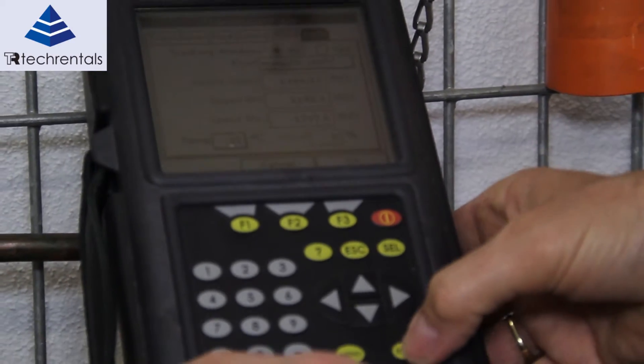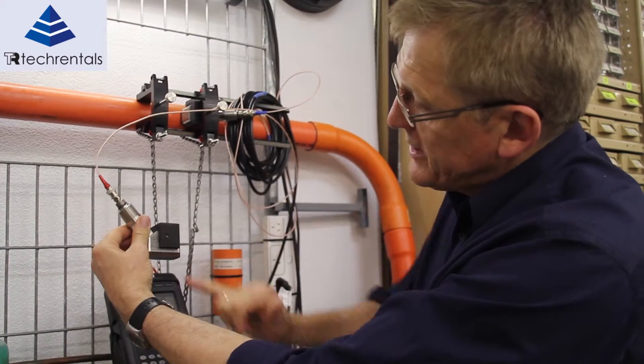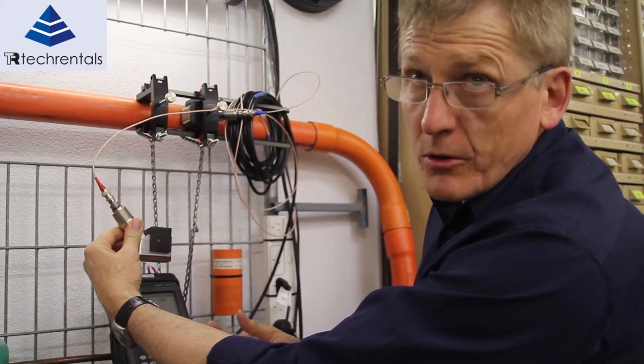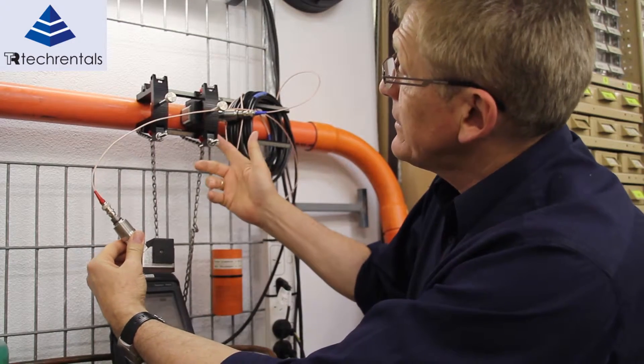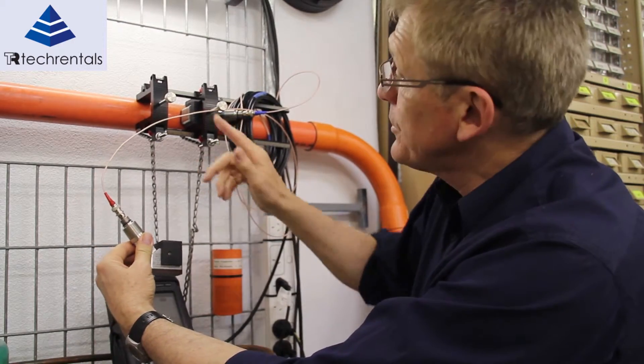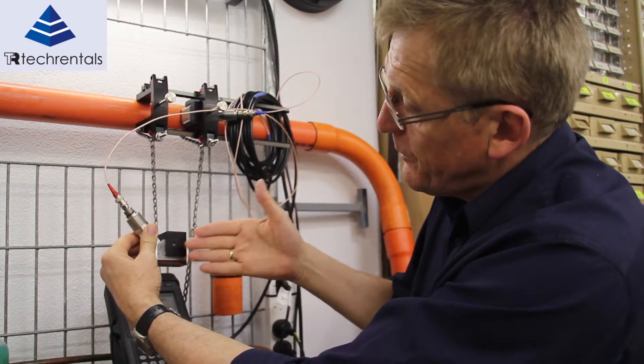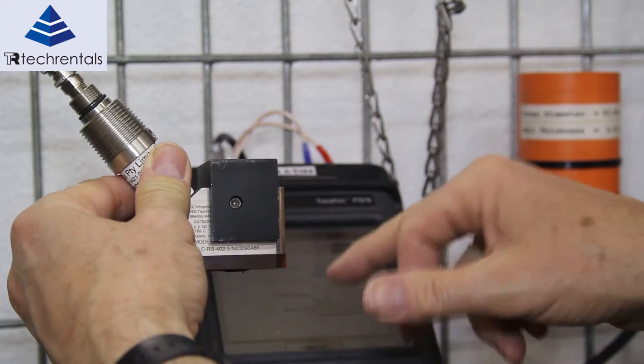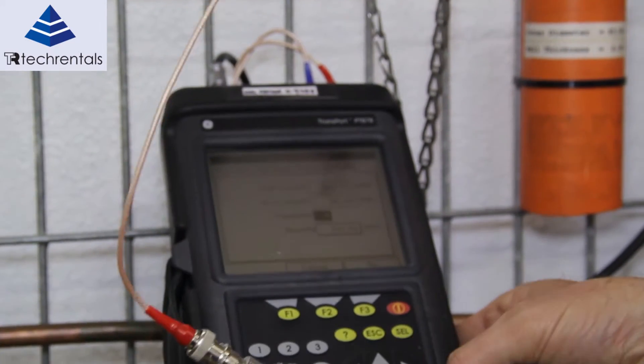Last thing we need to do is select the number of paths. If we have a single path, here's the pipe here, that means we'd have the transducers on opposite sides. This particular jig is configured for two paths, however if we use two paths we'll end up with the transducers so close together they'll be hitting each other. So in this instance we'd select 4, usually this would be 2.